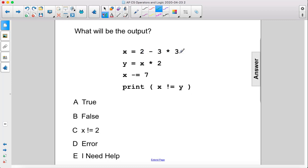First, we have order of operations. So multiplying comes before subtraction. So nine, two minus nine equals negative seven.